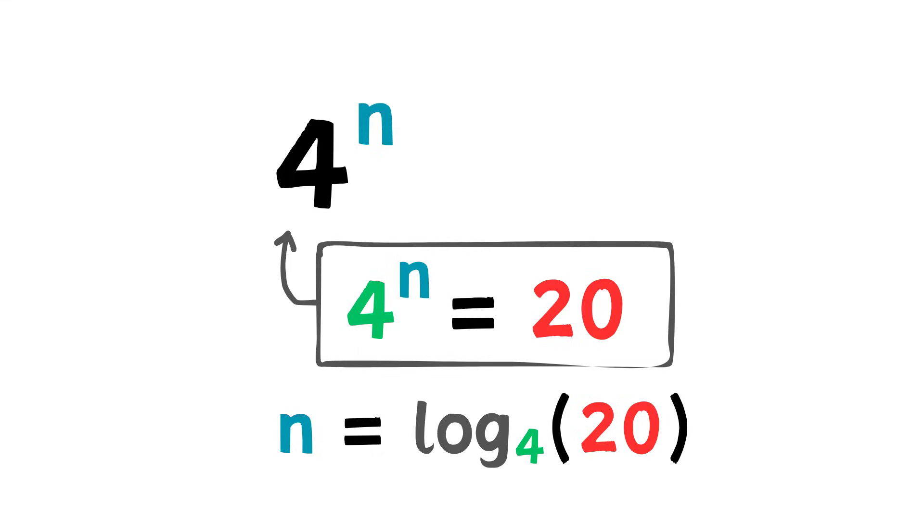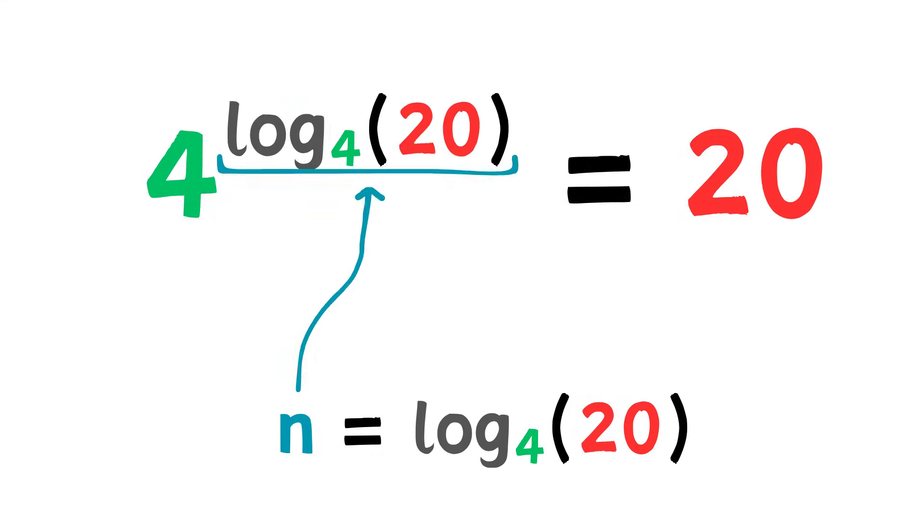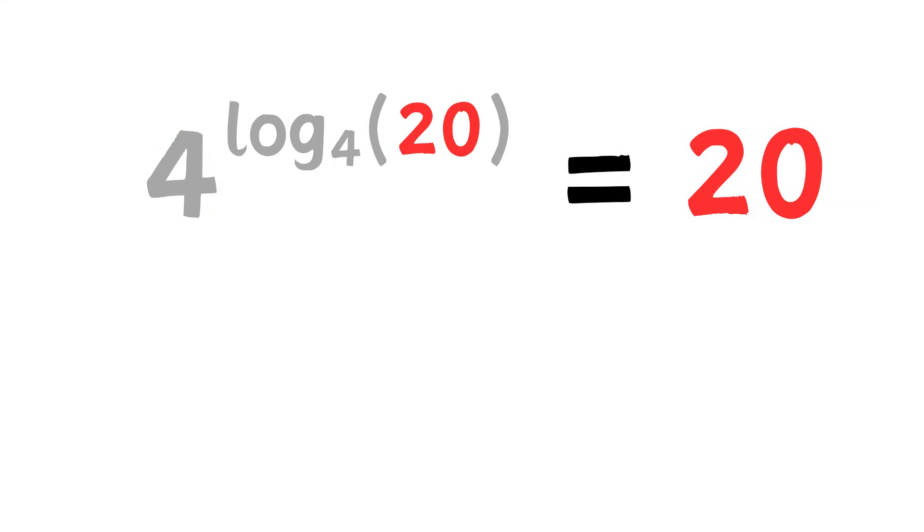But wait, we know that n is the exponent of 4 required to make 20. So this means the solution is 20. Because exponents and logarithms are inverse operations, if we raise an exponent to the power of a logarithm with the same base, the solution will be whatever is inside the logarithm function. How cool is that?